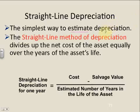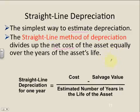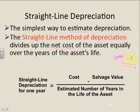The straight line method of depreciation divides up the cost — the net cost — of the asset equally. That's why we say straight line. If you were to graph it with expenses and time, it's going to be the same each period. It's a straight line.